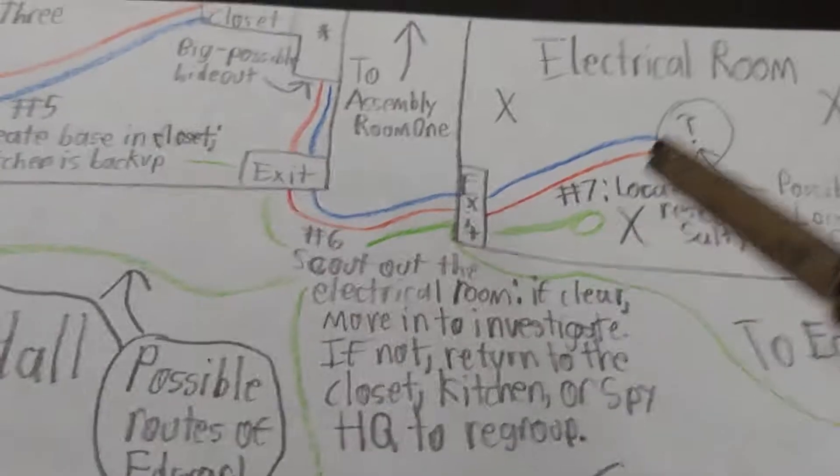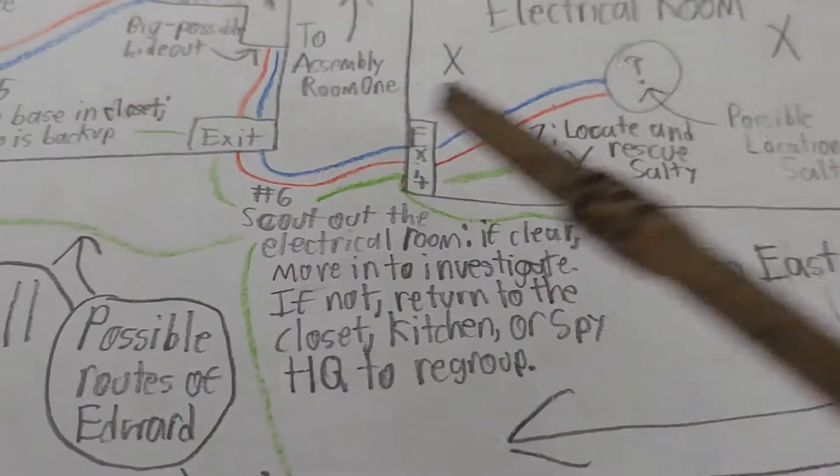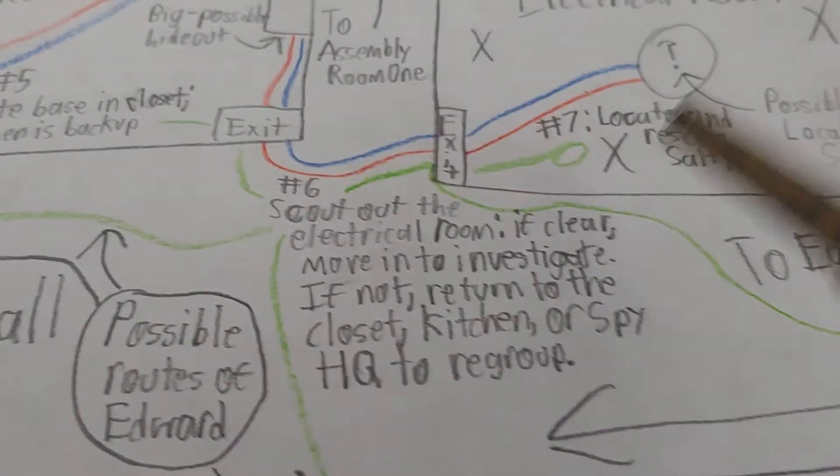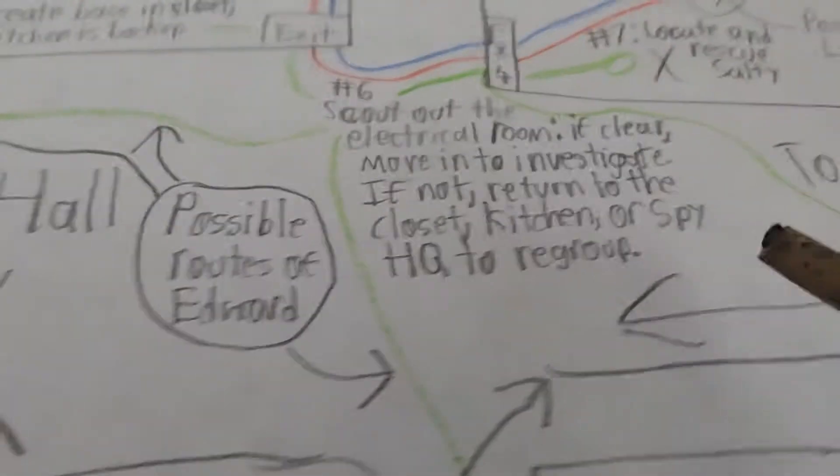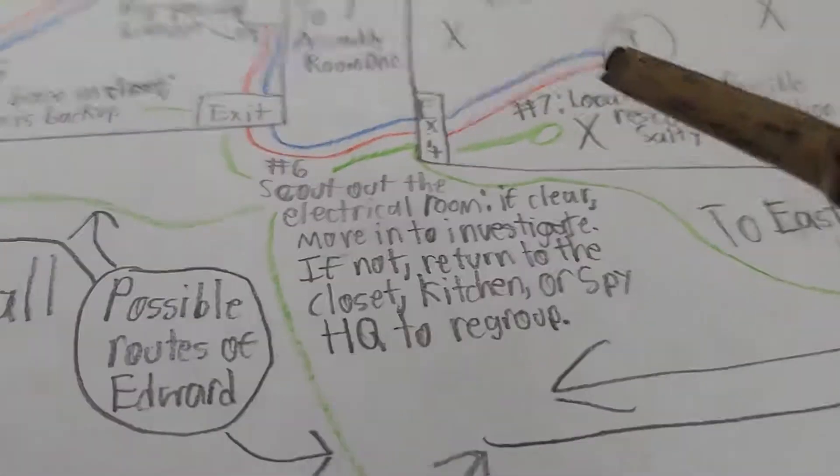This closet is where we'll set up the base camp. We come through here, exit it, and then we scope out the scene. If the electrical room is clear, we move in to investigate and check out if Salty is there or not. If it's not, we return to the closet, kitchen, or spy HQ, whichever one we need, and we regroup and think of a plan. And if it's clear, we move in and we locate and rescue Salty.